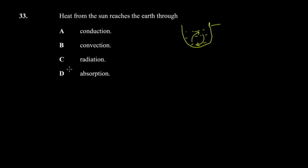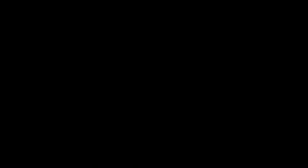Radiation is the transfer of heat through space — it requires no medium. So we choose radiation as the method by which heat from the sun reaches the earth.